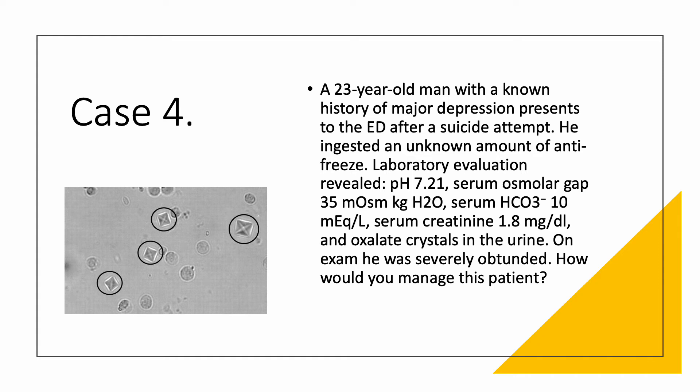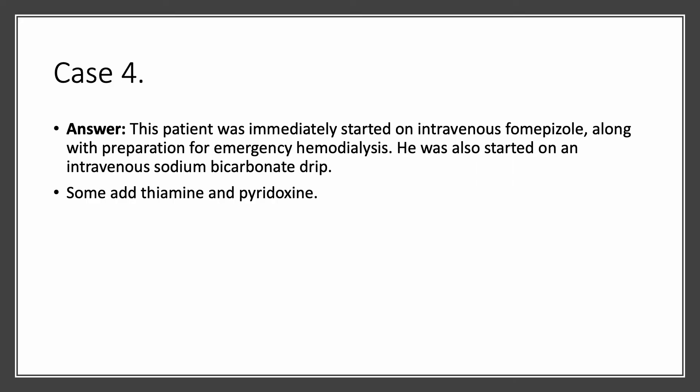Everything is really screaming dialysis. You are going to give intravenous fomepizole, which is an inhibitor of alcohol dehydrogenase. You are going to start a sodium bicarbonate drip. If you want to give thiamine and B6, that's fine. But you need to do emergency dialysis. You have obtundation, a very high osmolar gap, and severe metabolic acidosis. You must start dialysis.